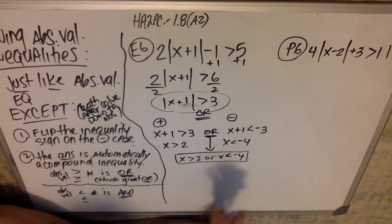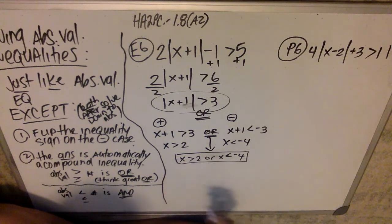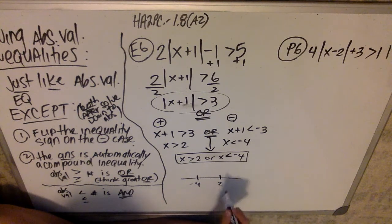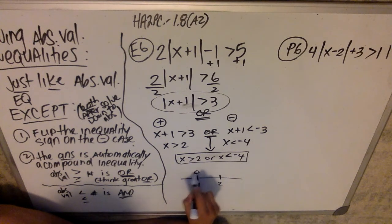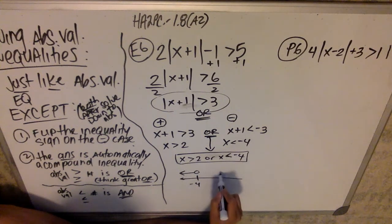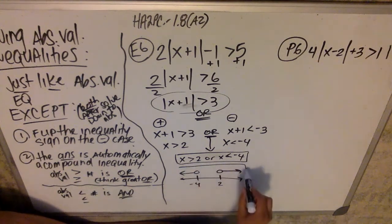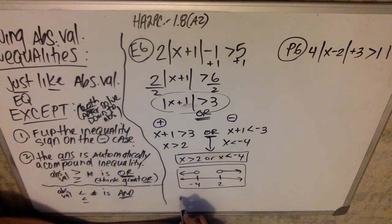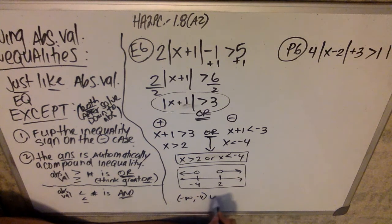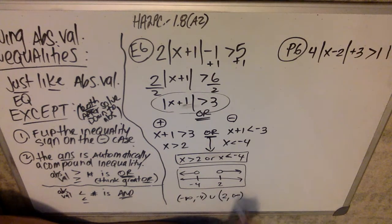On a number line, with negative four and two marked, this says numbers from negative four and down, and numbers from two and up. Because it's 'or', I don't need to worry about overlap. In interval notation, the answer would be negative infinity to negative four, parentheses, union two to infinity — parentheses because it's not equal to. I use a 'U' for union in the middle.